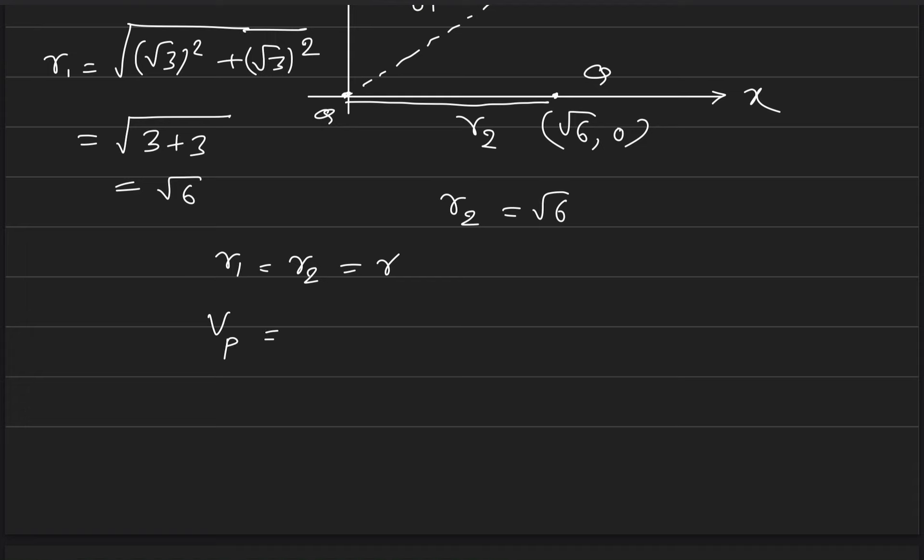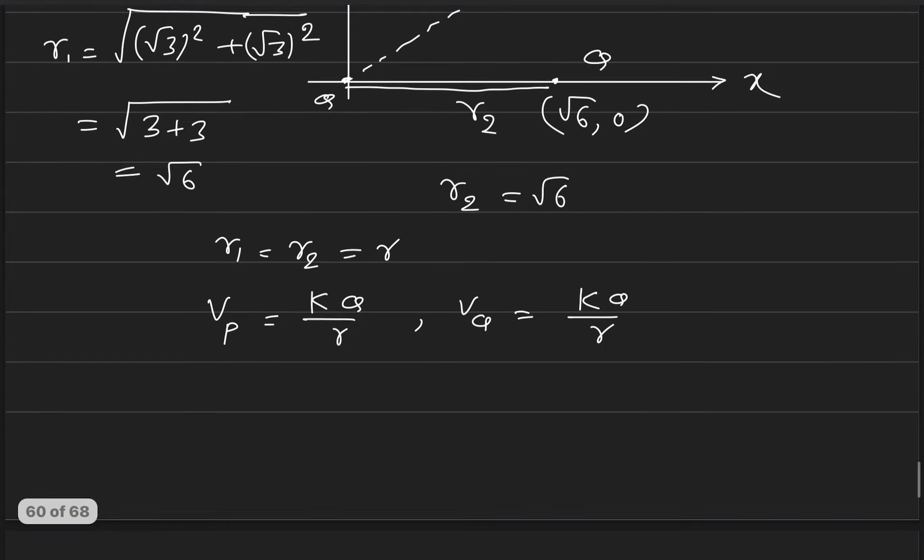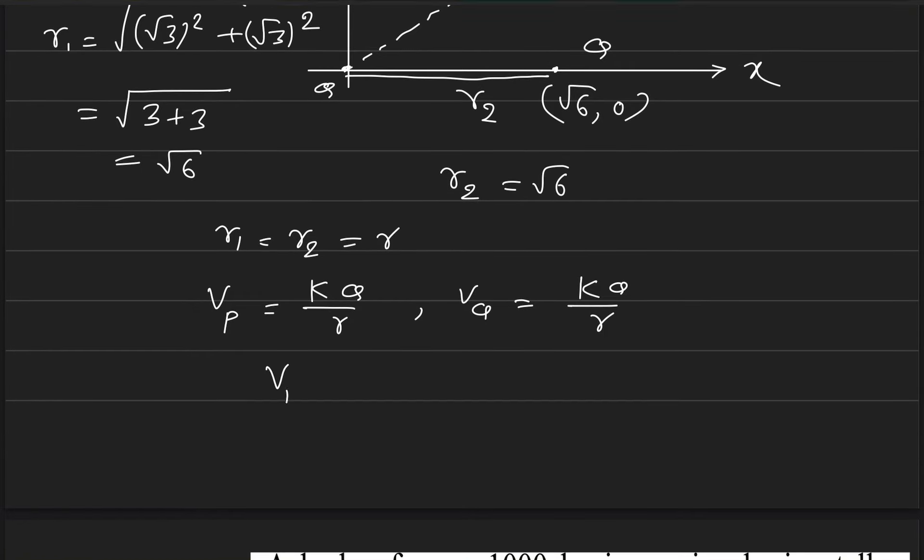If we write the potential at point P, it's kq by r, and potential at point Q is kq by r. The distance is the same and charge is the same, so both potentials are equal.